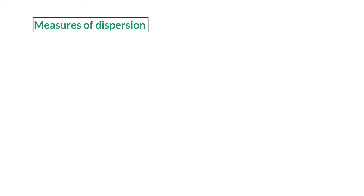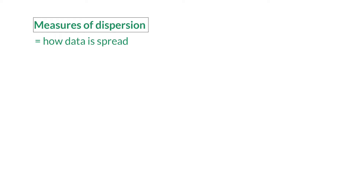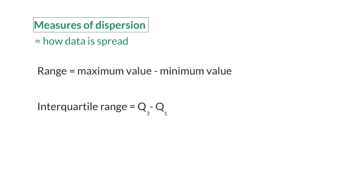The measures of dispersion tell us how the data is spread, or how much the data values differ from each other. These measures are the range, the interquartile range, and the semi-interquartile range. The range is the difference between the maximum and the minimum value.